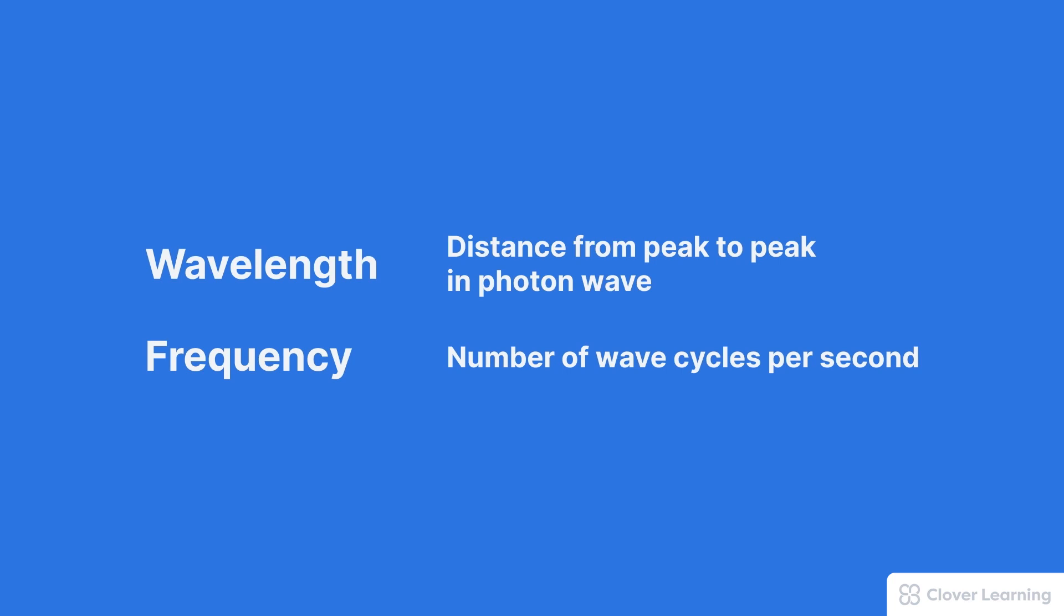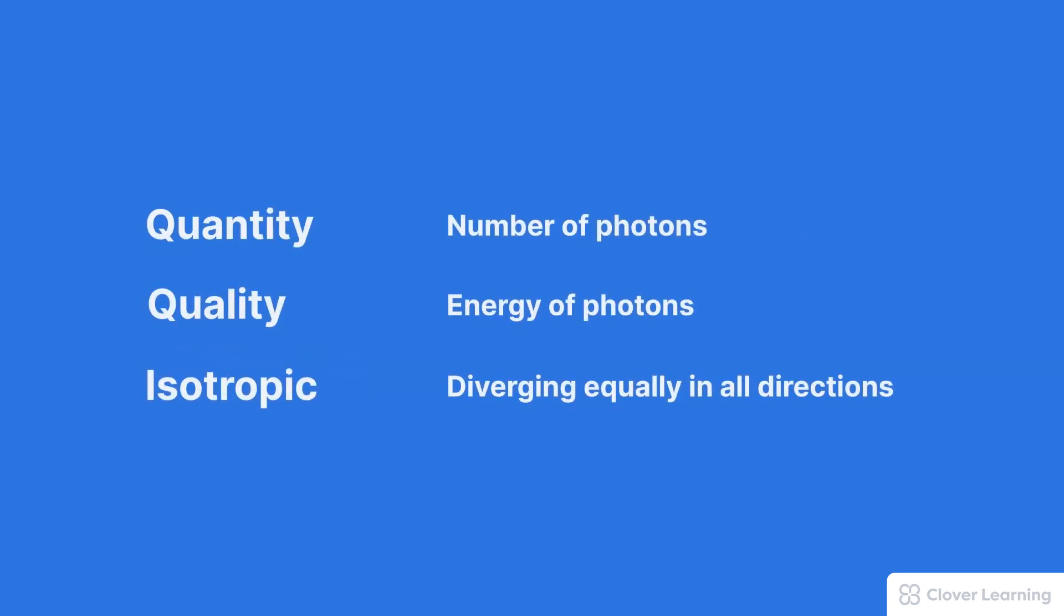Related to this is the frequency. Frequency is the number of wave cycles per second. As frequency increases, the photon energy increases. Another term is quantity. Remember that quantity refers to the number of x-ray photons. And a similar term is quality, except this term refers to the energy of photons.